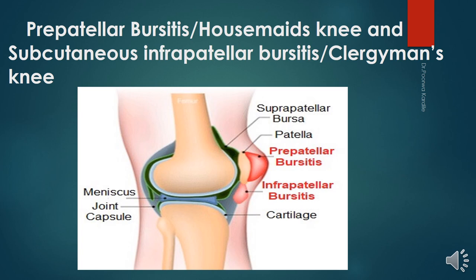Pre-patellar bursitis is caused by friction between the skin and patella, or by compressive forces from a direct blow or falling on a flexed knee. If the inflammation is chronic, the bursa becomes distended with fluid and forms a swelling anterior to the knee, known as housemaid's knee. Others who work on their knees without knee pads, such as floor and rug installers, may also develop pre-patellar bursitis. Subcutaneous infra-patellar bursitis is caused by excessive friction between the skin and tibial tuberosity, causing edema over the proximal end of the tibia, known as clergyman's knee.